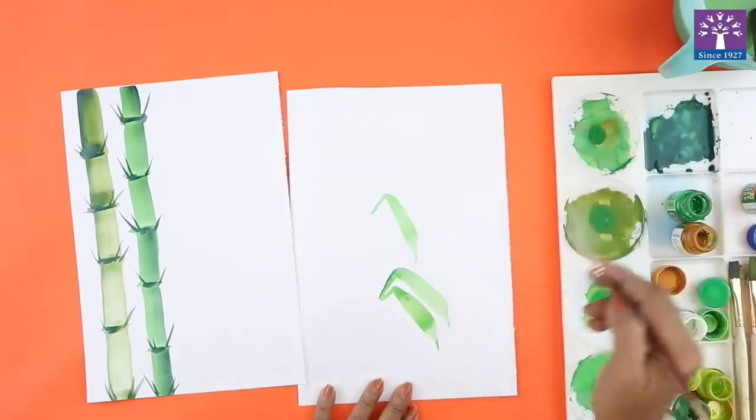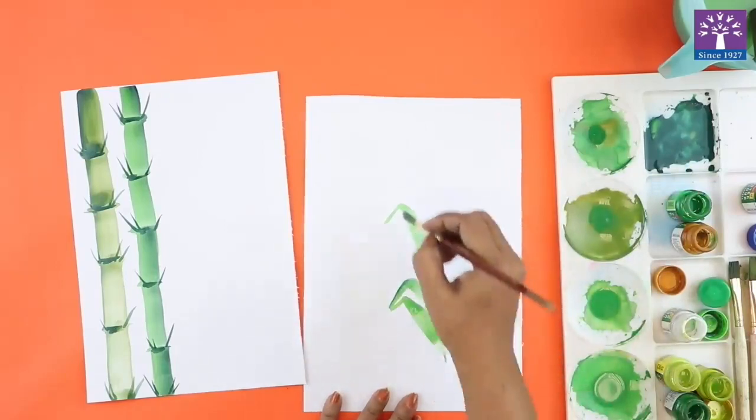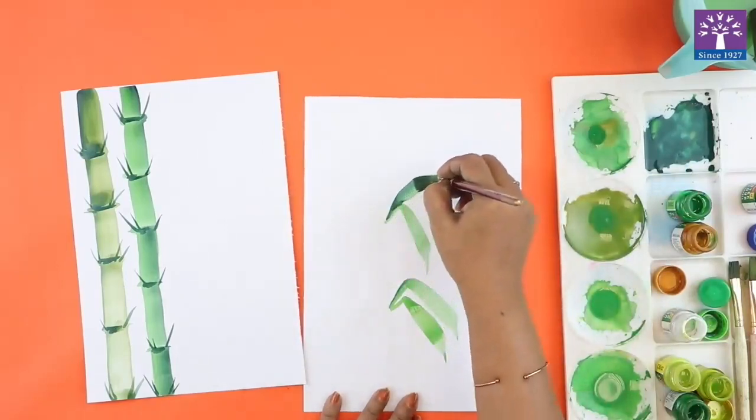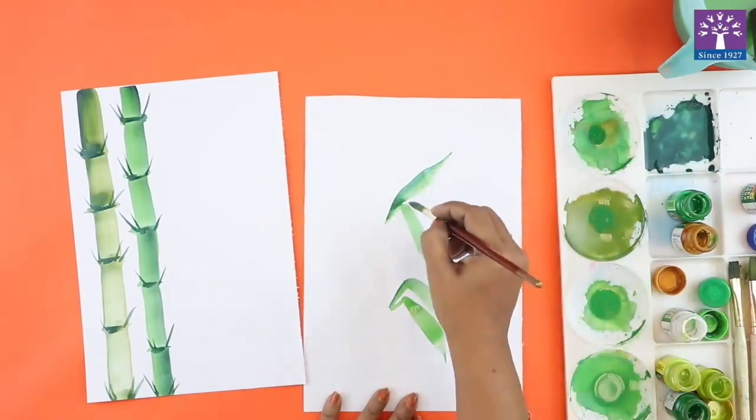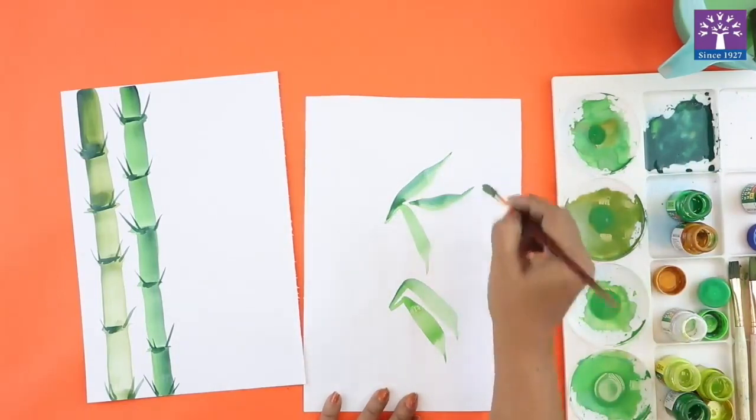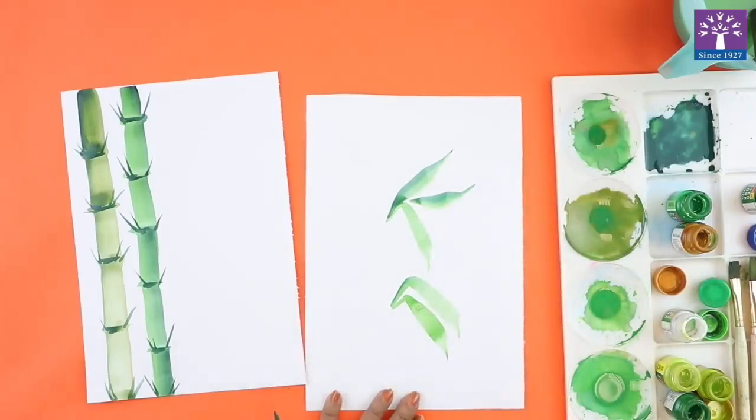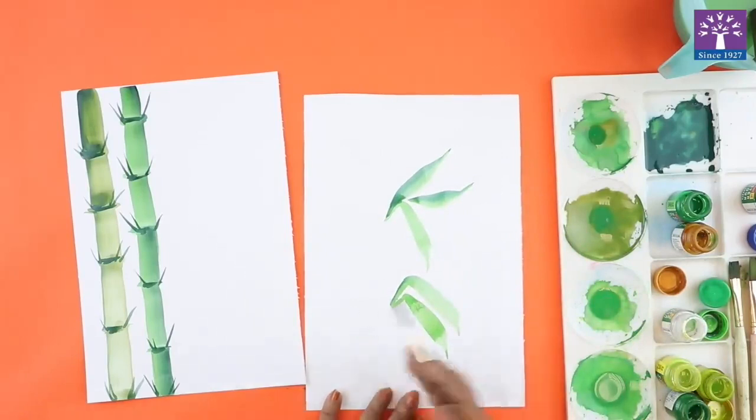If you want to draw the leaves that are going up. So the way you move your brush will determine the side where your leaf will turn.